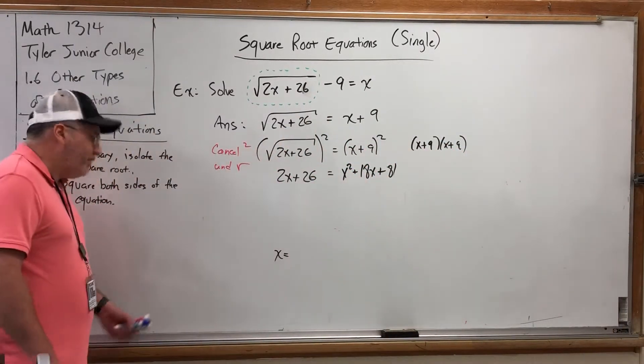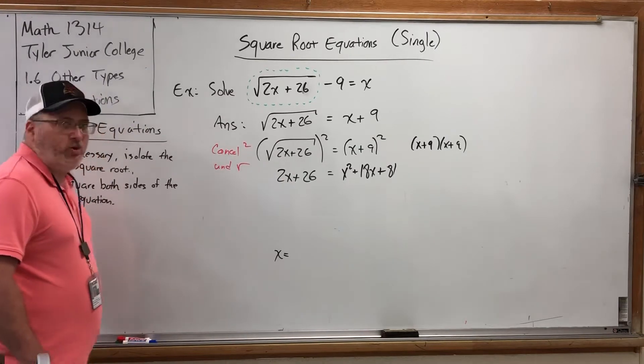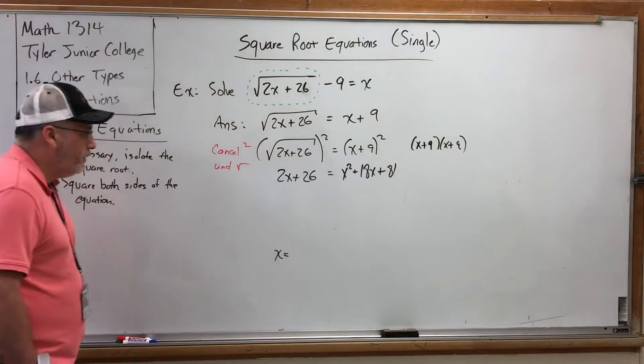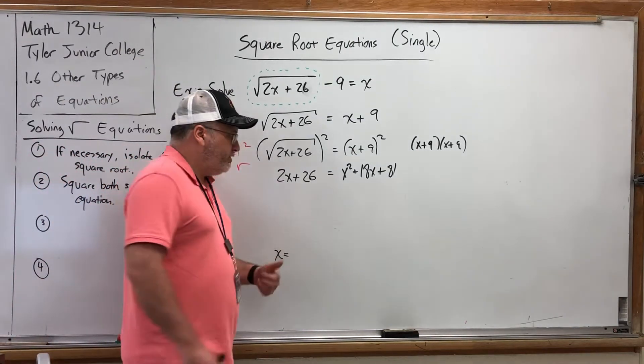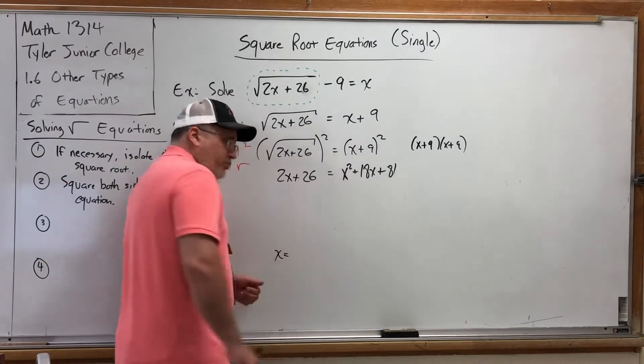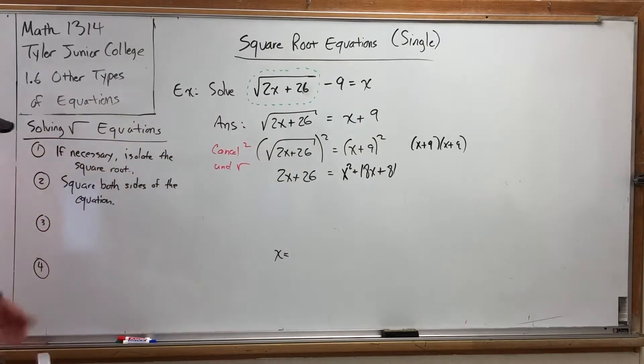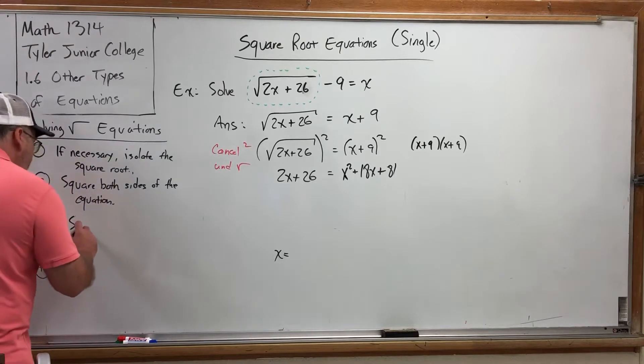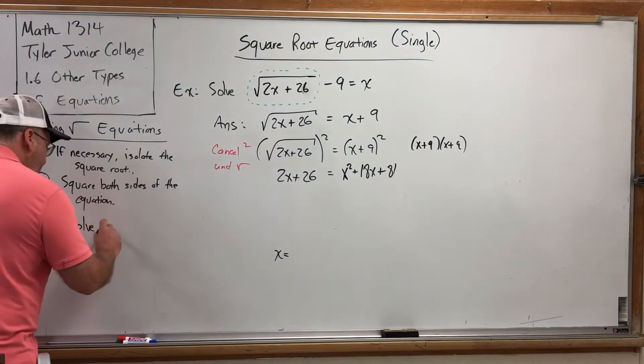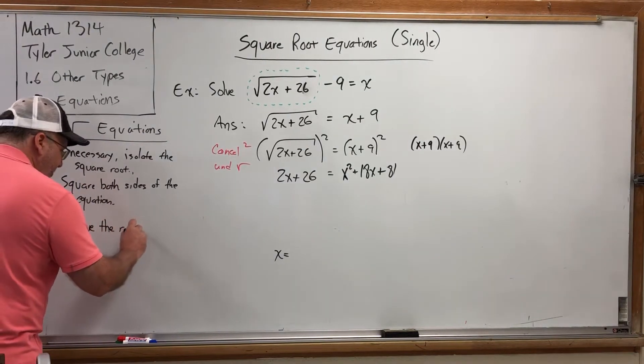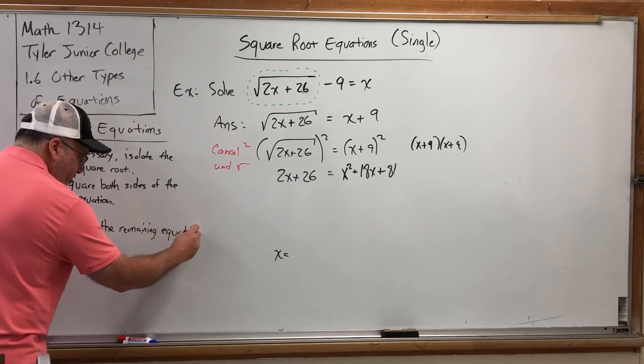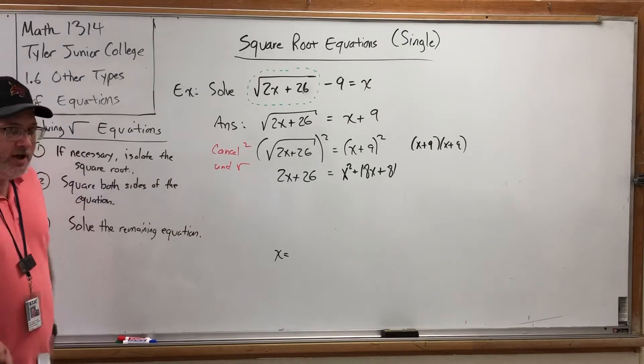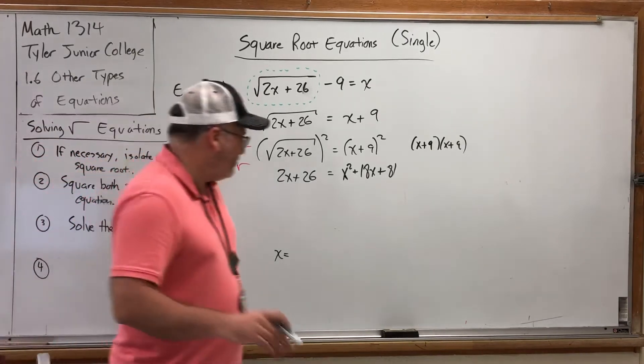All right, I got rid of the biggest obstacle. The biggest obstacle was the square root, and now it's gone. But in exchange for it, I picked up an x squared, which is not necessarily a bad thing because we have ways of dealing with quadratic equations. Step 3. Solve the remaining equation. You basically change the structure of the equation. Structurally, it used to be a square root equation, and now it's a quadratic equation, and we have to solve it as such.